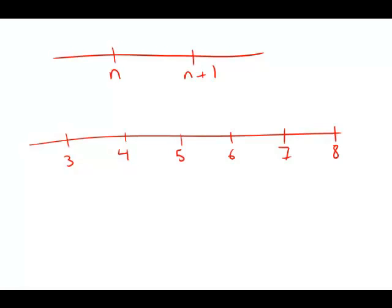On a scale that measures the intensity of a certain phenomenon, a reading of n+1 corresponds to an intensity that is 10 times the intensity corresponding to a reading of n.